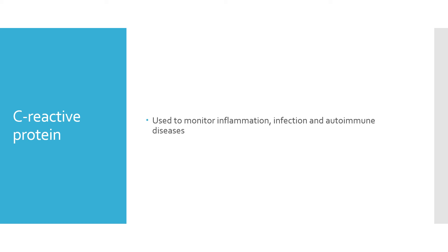Lymphokines are produced by T cells and are released when they come in contact with specific antigens; they stimulate monocytes and macrophages. Monokines, on the other hand, are produced by macrophages and affect the growth and activity of other white cells.